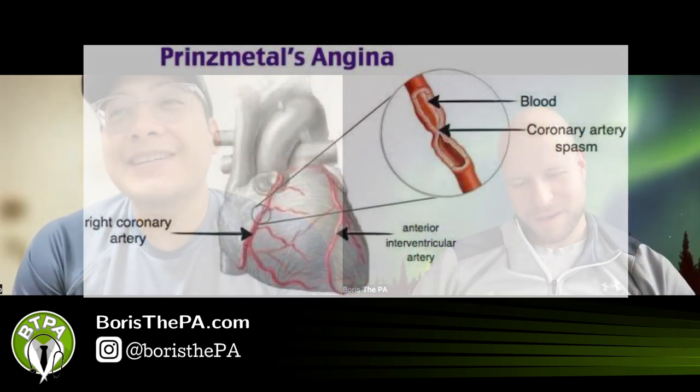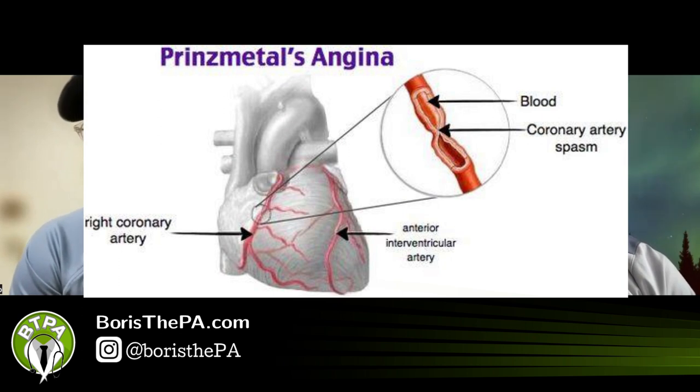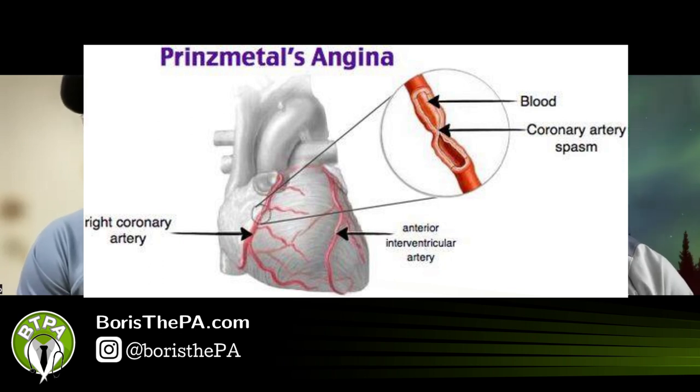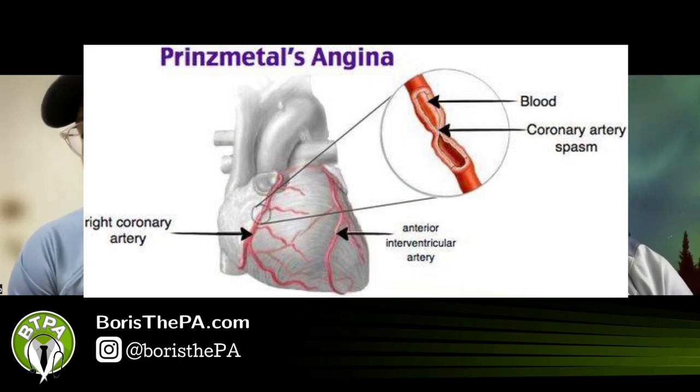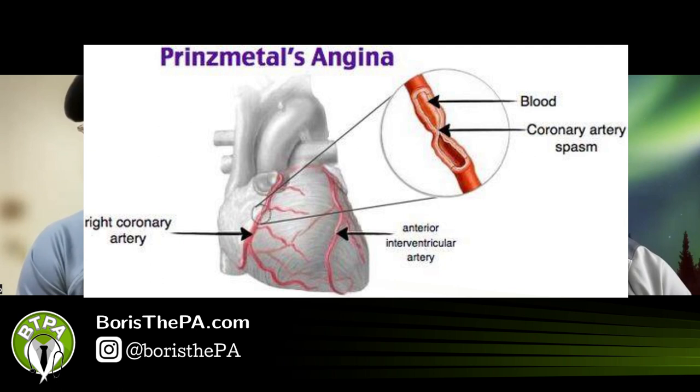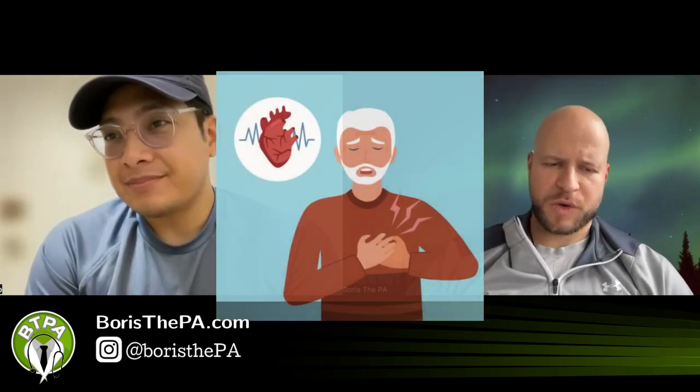Let's give the viewer a few seconds to think of an answer. Prinzmetal or vasospastic angina is a spasm of the LAD — the left anterior descending artery, the 'widow maker' — or the right coronary artery. So it's one of those two arteries: the LAD or the right coronary.